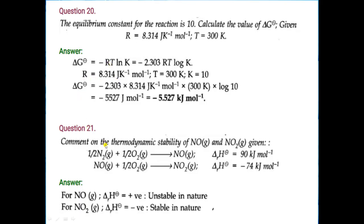Question number 21: comment on the thermodynamic stability of NO and NO₂. Two equations are given. In the first equation, nitrogen combines with oxygen to form NO and heat is absorbed. In the second equation, NO₂ is formed and heat is released — this is an exothermic reaction. Since less energy means more stability, NO₂ is more stable; so the second equation is stable in nature.